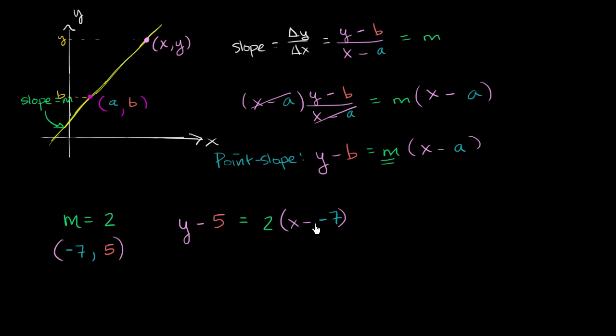And if we don't like the x minus negative 7 right over here, we could obviously rewrite that as x plus 7. But this is kind of the purest point-slope form. If you want to simplify it a little bit, you could write it as y minus 5 is equal to 2 times x plus 7. And if you want to see that this is just one way of expressing the equation of this line, there are many others, and the one that we're most familiar with is y-intercept form. This can easily be converted to y-intercept form.